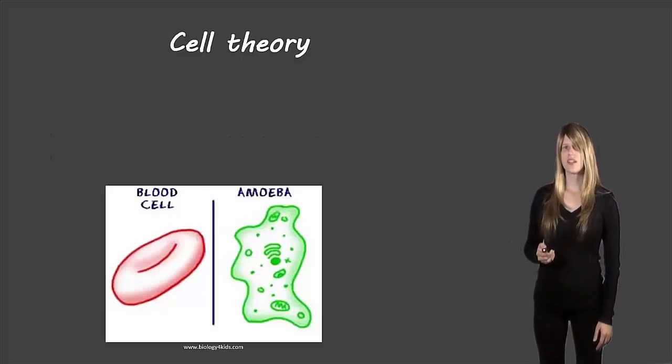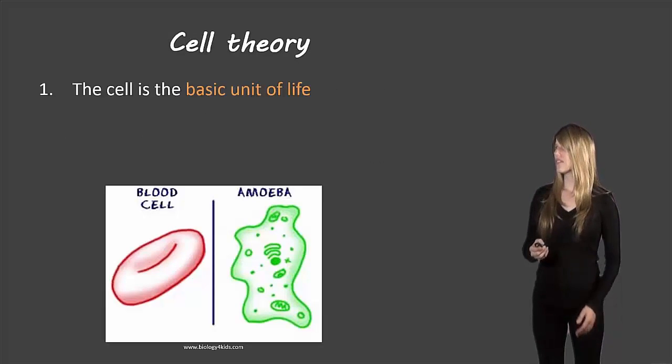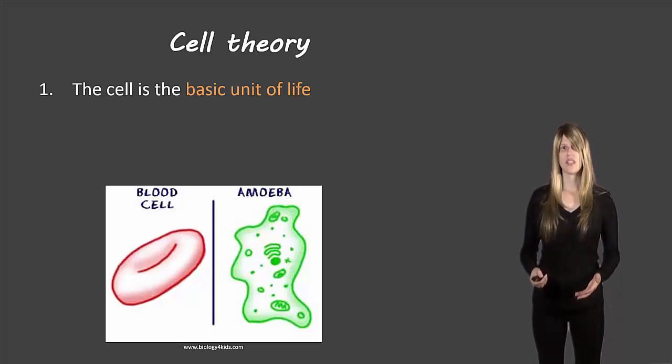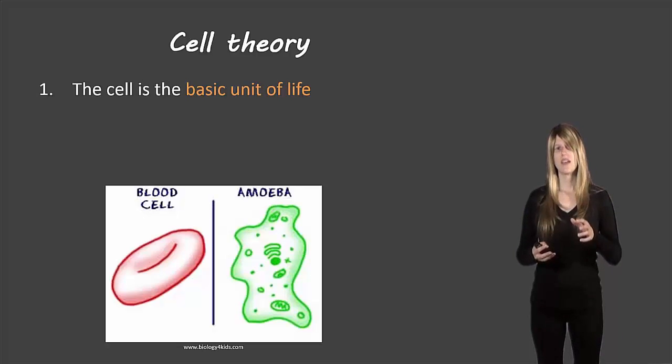First of all, let's take a look at the cell theory. The cell is the basic unit of life. What that means is if you look inside of a cell and you see the different parts, the different organelles, if you take out an organelle that thing is not going to be living on its own. You can't divide the cell up into smaller pieces and still have something that's considered living.